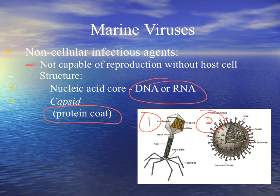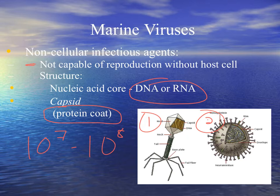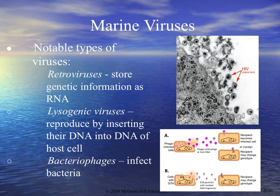Almost any organism on Earth can be infected by some sort of virus, and that includes the marine environment. In the marine environment, we have anywhere from 10 to the 7th to 10 to the 8th virus particles in a milliliter of seawater. A milliliter is a drop, so anywhere from 10 to 100 million viruses in a drop of seawater — and that's pretty impressive. These viruses serve many roles in the marine environment, among which is infecting populations, regulating populations, and also helping to regulate certain things in the environment.